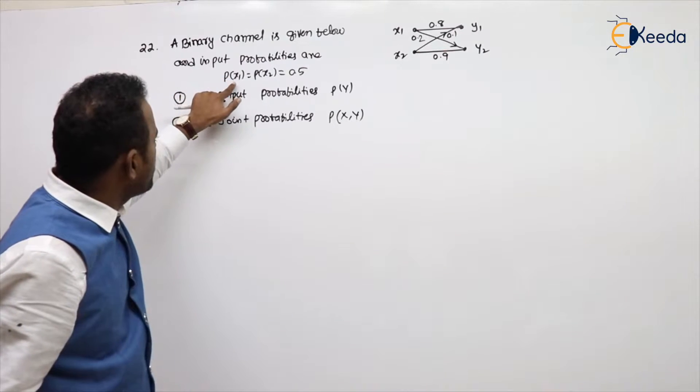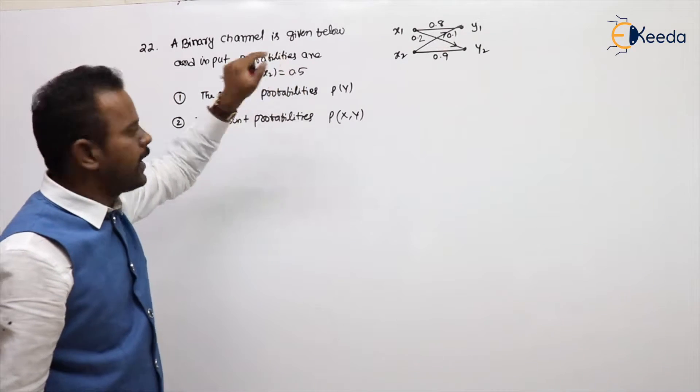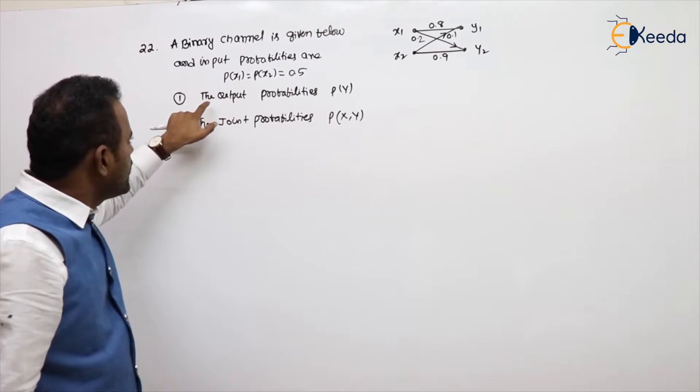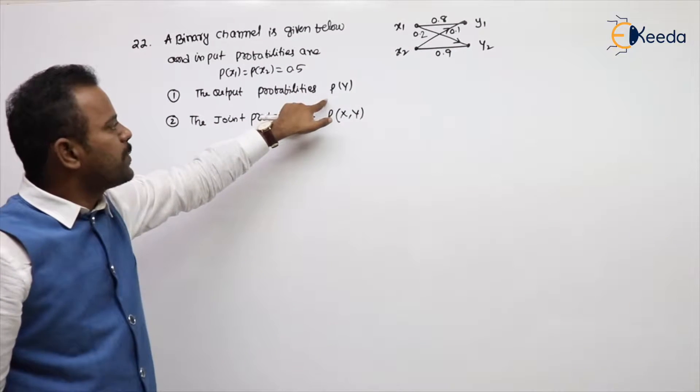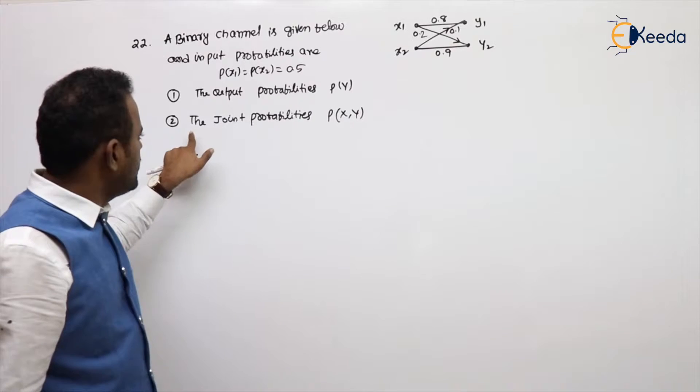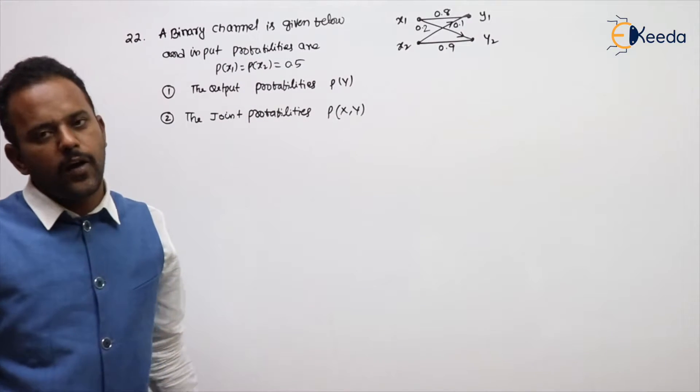An input probability is P(x1) and P(x2) value is given as 0.5. First question: the output probability P(y). Second question: the joint probability P(xy).